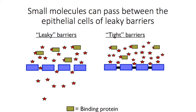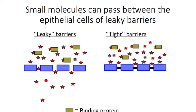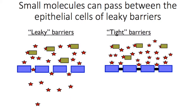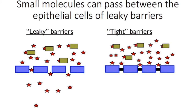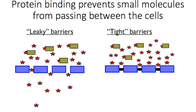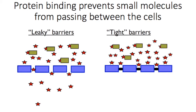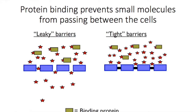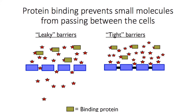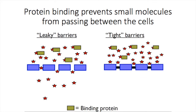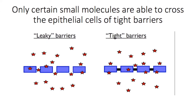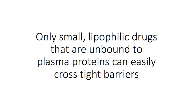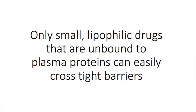So to recap: small molecules, both hydrophilic and lipophilic, can penetrate across leaky epithelial barriers which separate blood from tissues like muscle, fat, and bone. However, if a proportion of the drug is bound to protein in the plasma, only the free drug is able to penetrate the leaky barriers, because drug bound to protein is too large to fit between the cells. There are some drug molecules that are able to cross both leaky and tight barriers, and these tend to be lipophilic drugs that are unbound to plasma proteins.